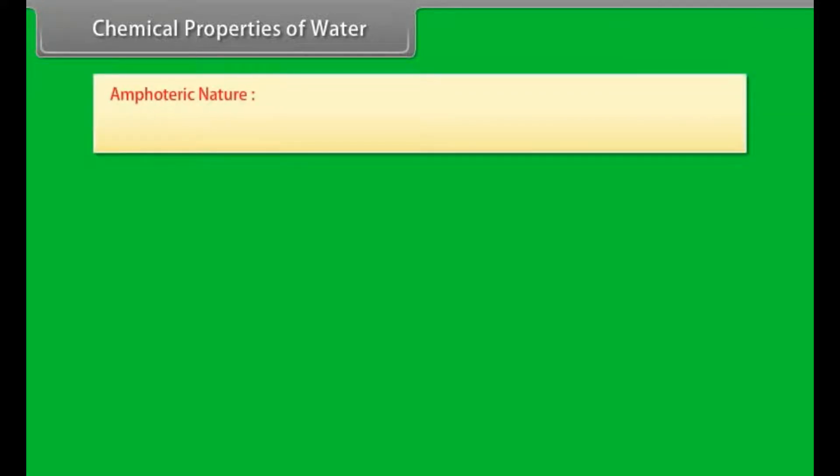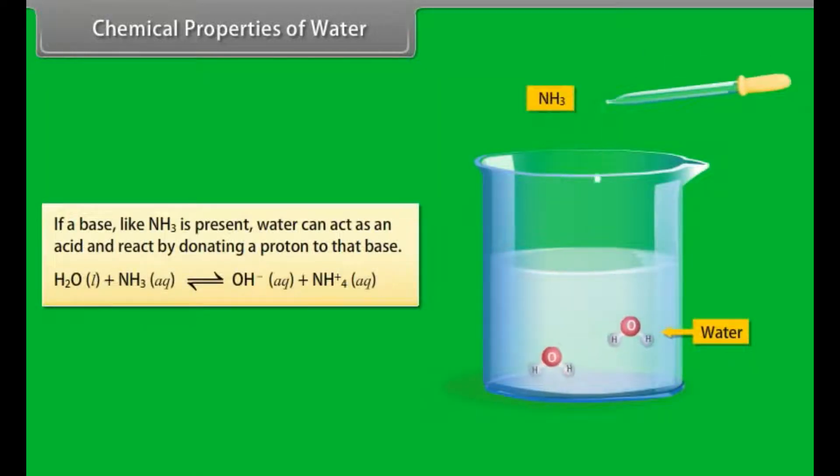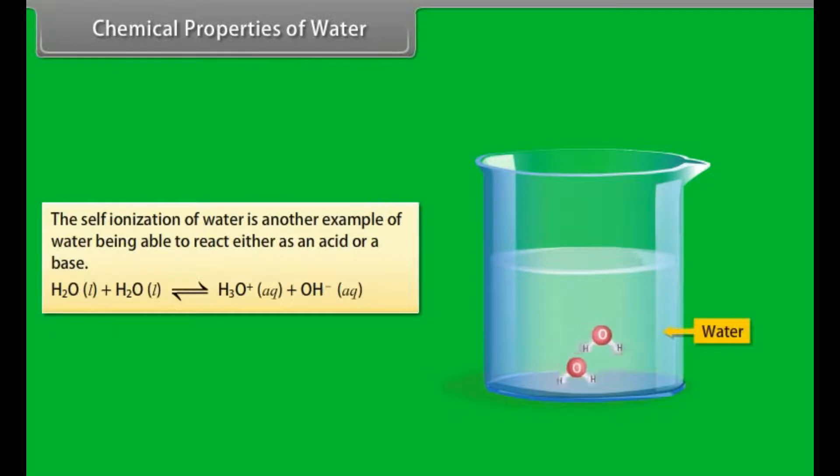Chemical properties of water: Amphoteric nature. The ability of some chemicals to act either as an acid or a base is called amphotericism. If a base like NH3 is present, water can act as an acid and react by donating a proton to that base. If an acid like H2S is present, water can act as a base and react by accepting a proton from that acid. The self-ionization of water is another example of water being able to react either as an acid or a base.